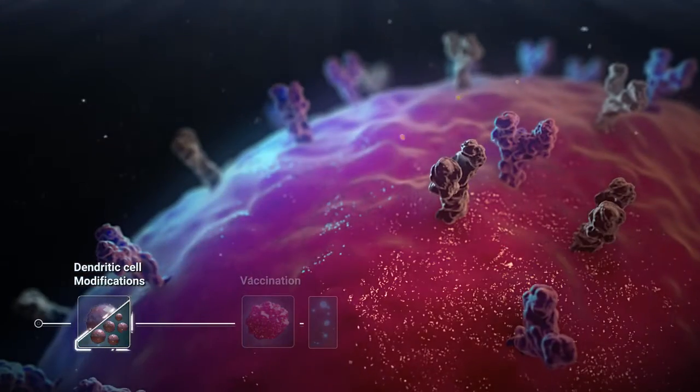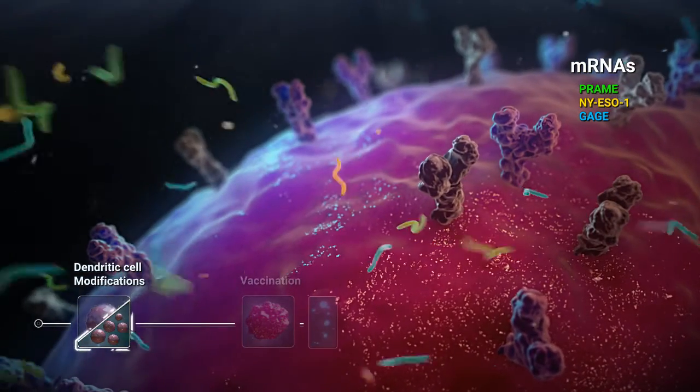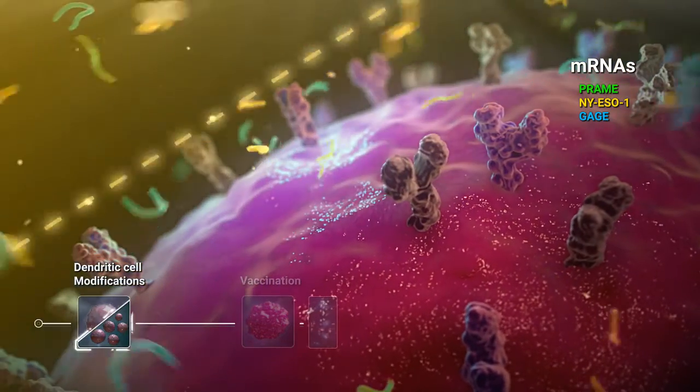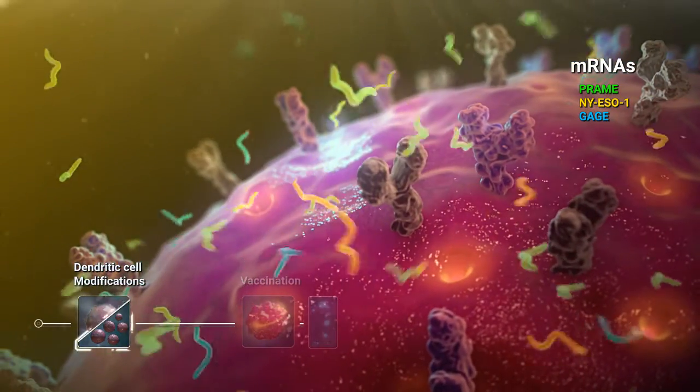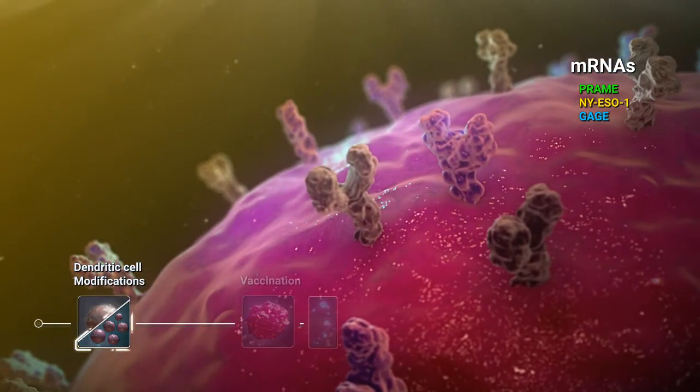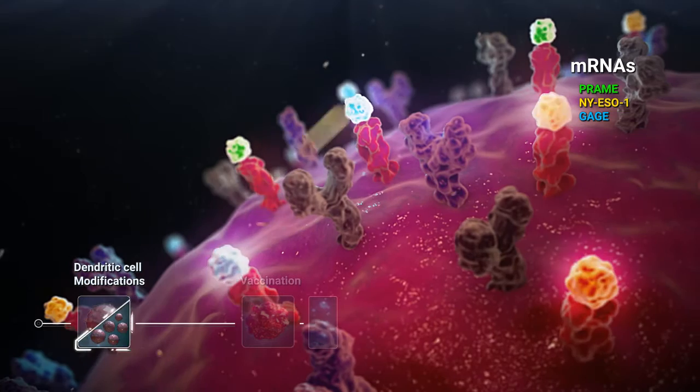Careful selection of these antigens can make the therapy tumor and patient-specific. The mRNA encoding for the chosen antigens is electroporated into the cell. This leads to presentation of a broad spectrum of antigen-specific epitopes on the surface of the dendritic cell.